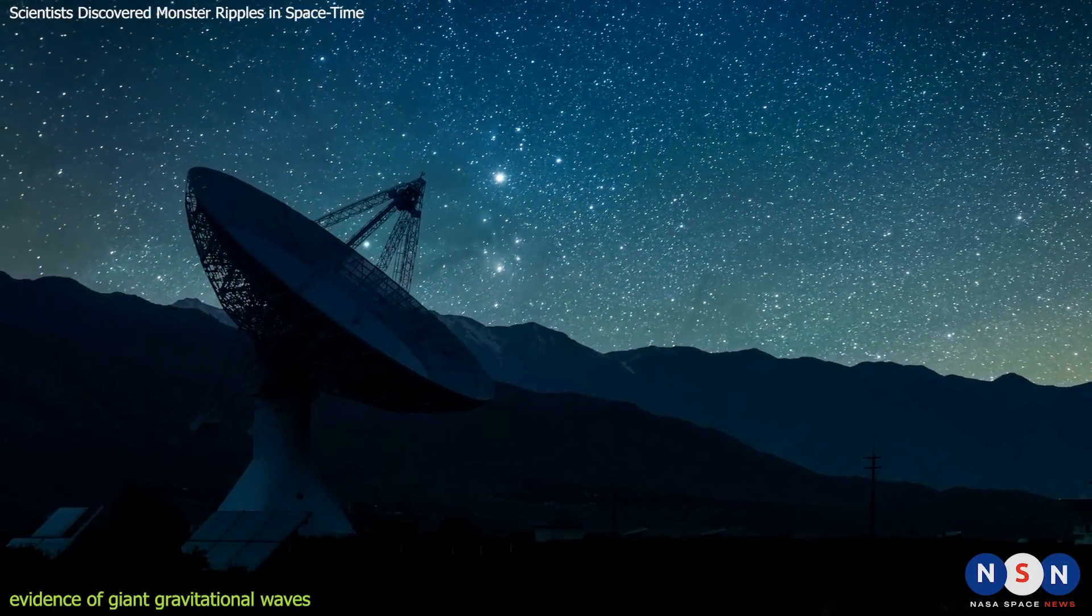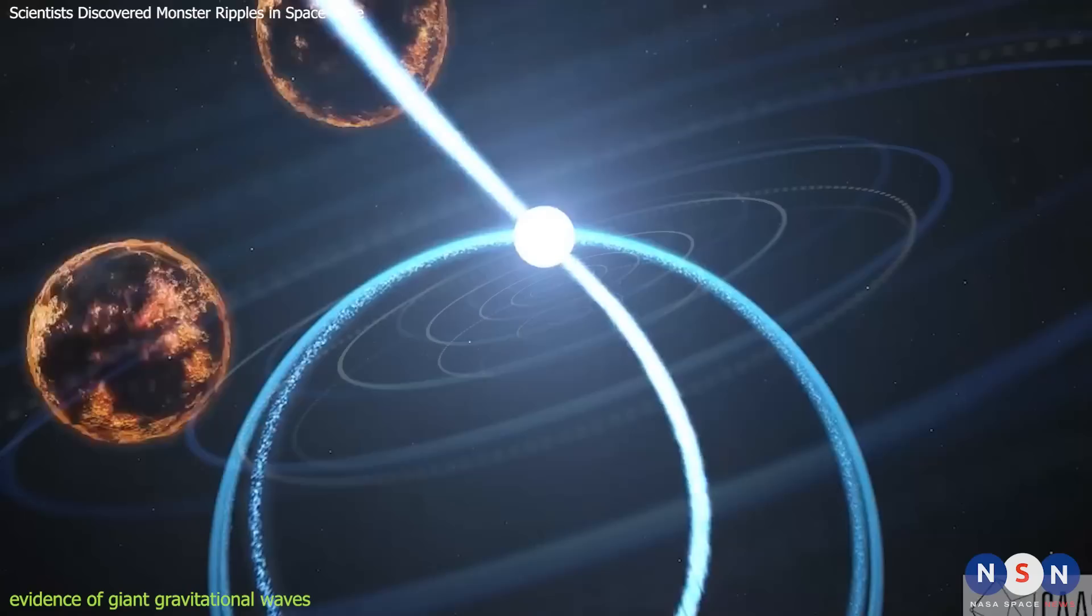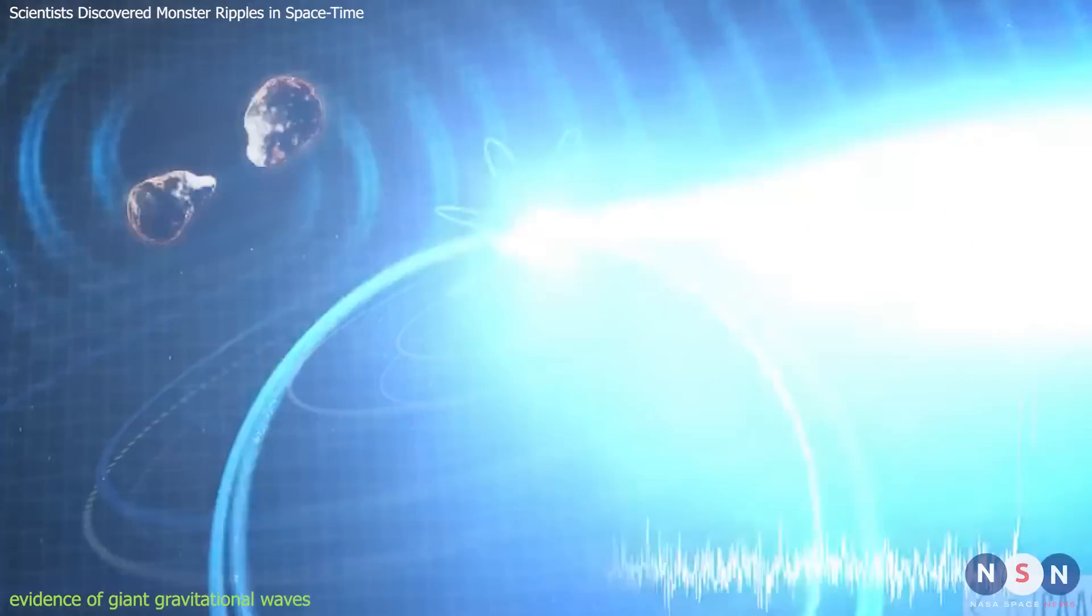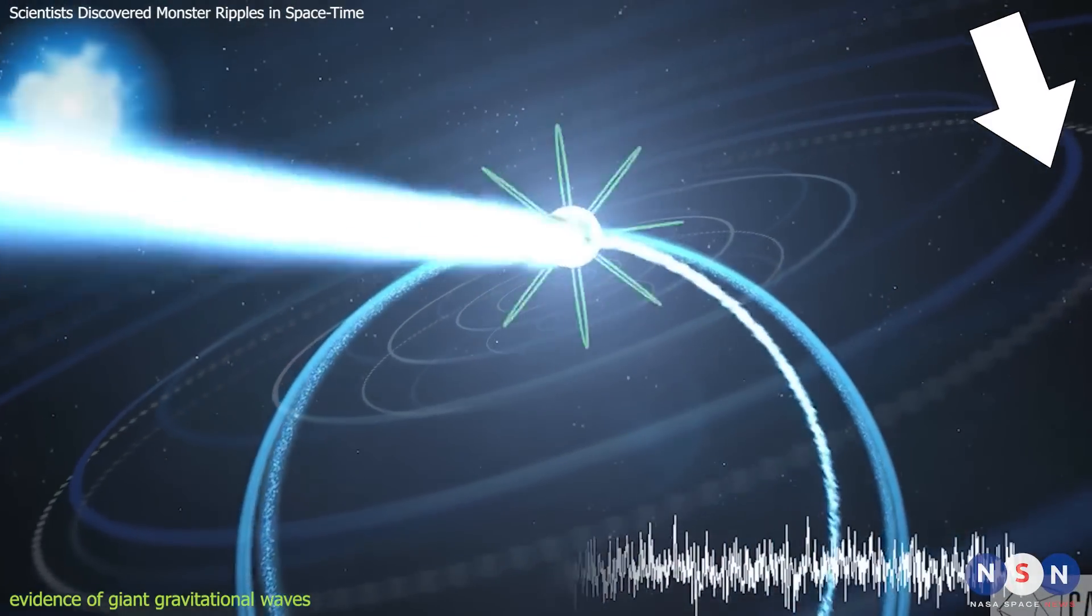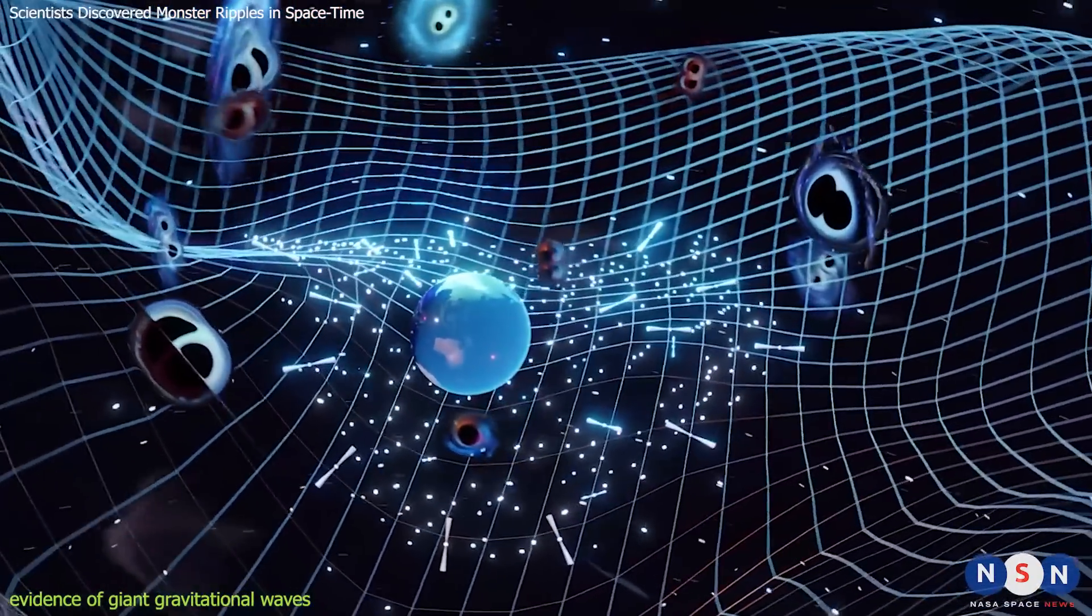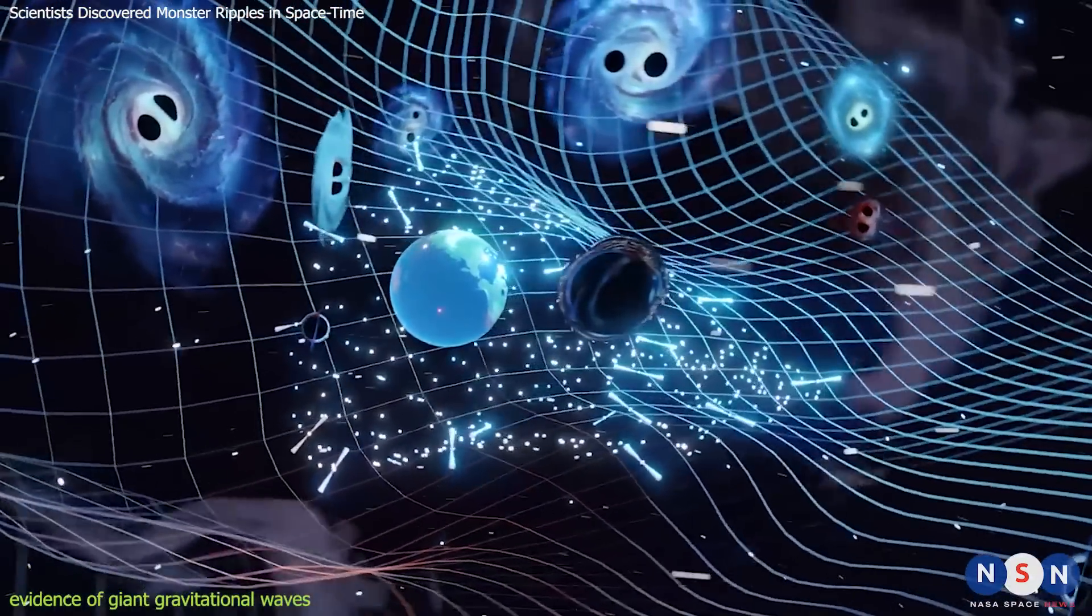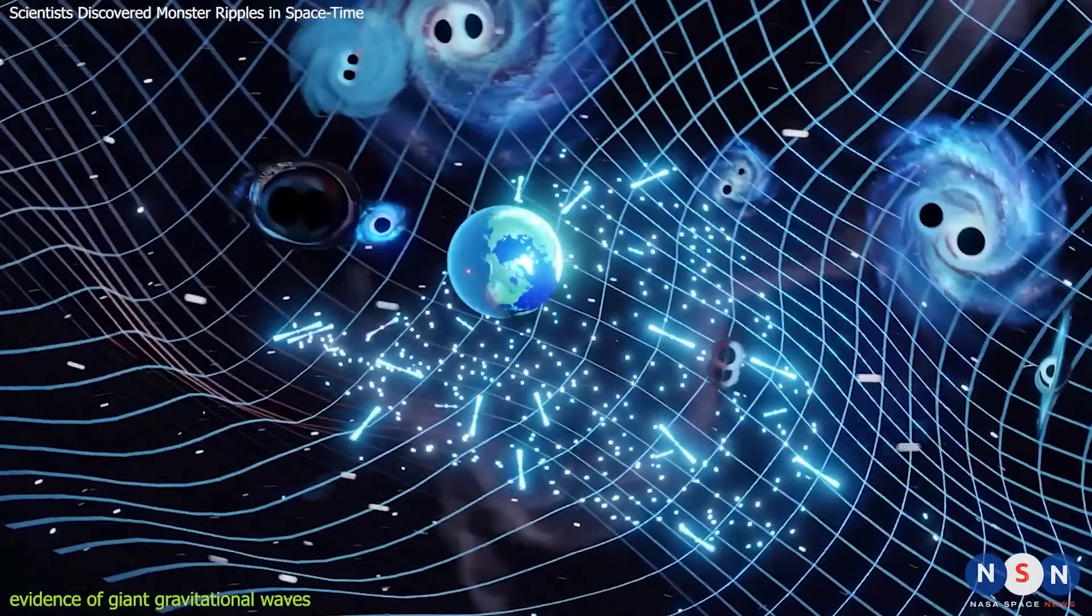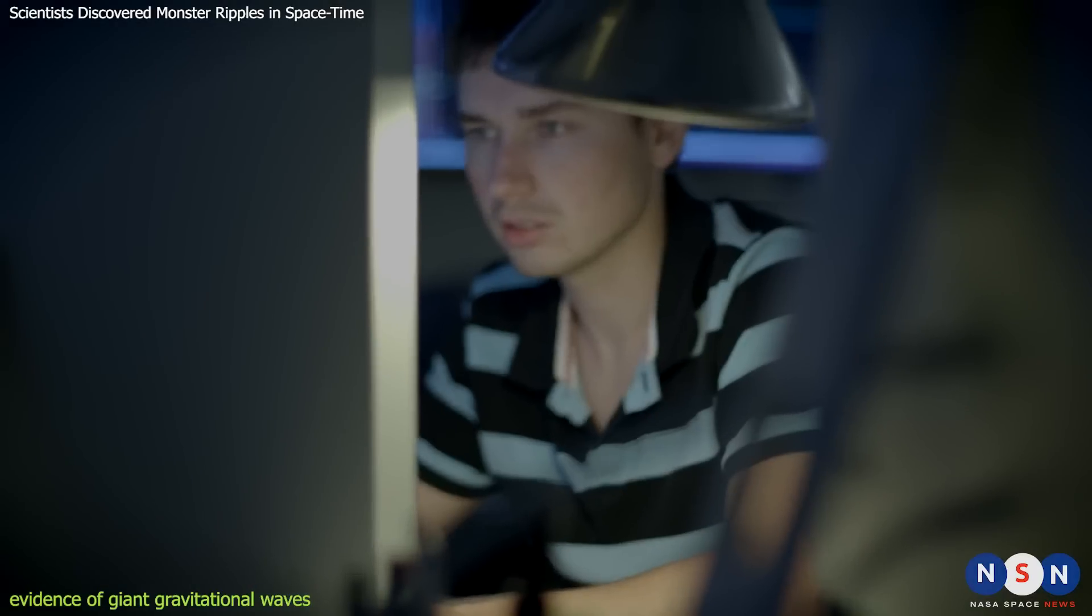The four teams used arrays of radio telescopes around the world to track changes over more than a decade in the distances between Earth and dozens of millisecond pulsars in the Milky Way. They compared the signals from different pulsars and looked for tiny variations in their arrival times that could be caused by passing gravitational waves. If a gravitational wave stretches or squeezes space-time along the line connecting Earth and a pulsar, it will change the travel time of the radio pulse by a fraction of a microsecond. By combining data from multiple pulsars and multiple telescopes, the teams were able to increase their sensitivity and cancel out other sources of noise, such as the motion of the Earth, the solar wind, or the interstellar medium. They also used sophisticated statistical methods to analyze the data and look for patterns that could indicate the presence of gravitational waves. What they found was a consistent and significant signal that could not be explained by any other known phenomenon.